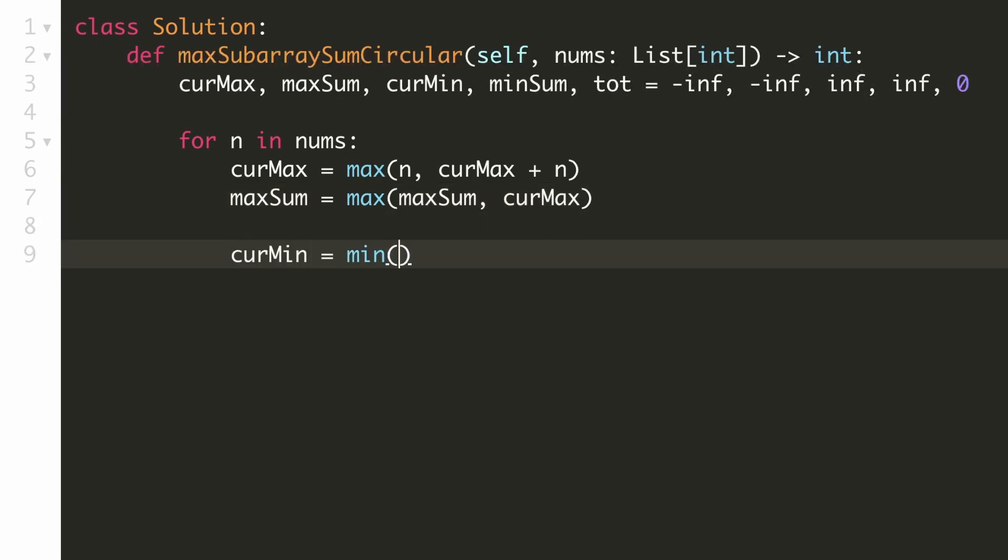Now we'll do the same thing to find the current minimum for this number. We'll also update the minimum subarray sum by taking the minimum of it with the current minimum. At the end, we'll add this number to the total of this array.